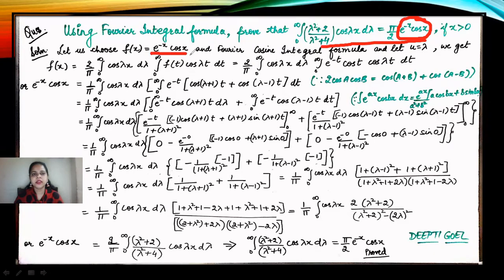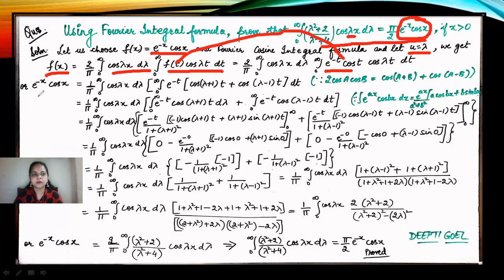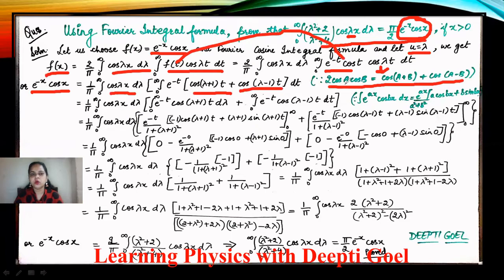With f(t) = e^(−t) cos t substituted, e^(−x) cos x = (1/π) ∫₀^∞ cos(λx) [∫₀^∞ e^(−t) cos(λt)·2 cos t dt] dλ. We apply 2 cos A cos B = cos(A+B) + cos(A−B), giving the inner integral as ∫₀^∞ e^(−t)[cos((λ+1)t) + cos((λ−1)t)] dt, which we split into two integrals.